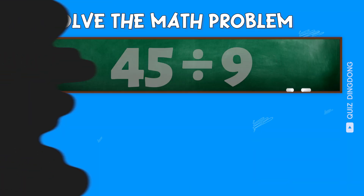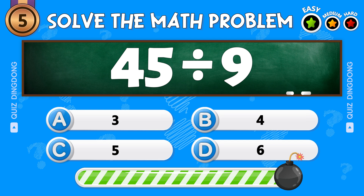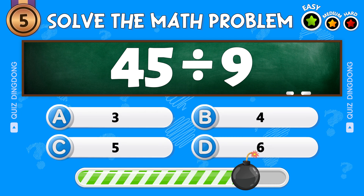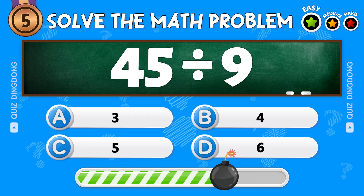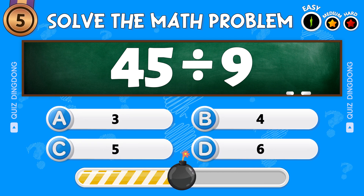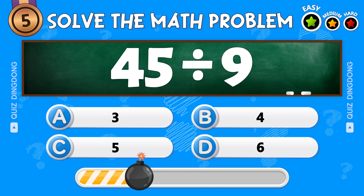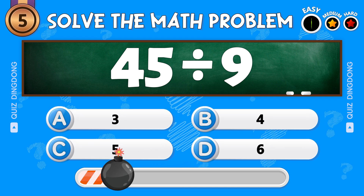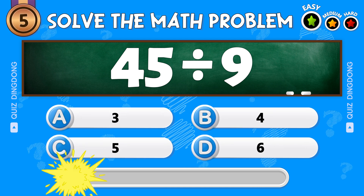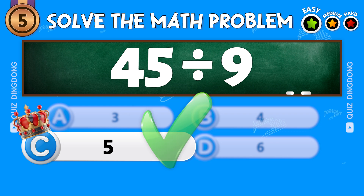Here's another one. What's 45 divided by 9? Exactly! That's 5!